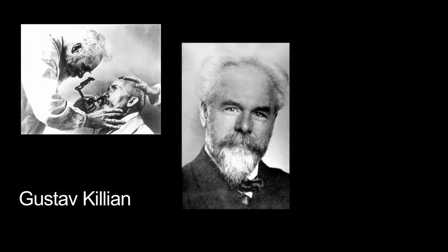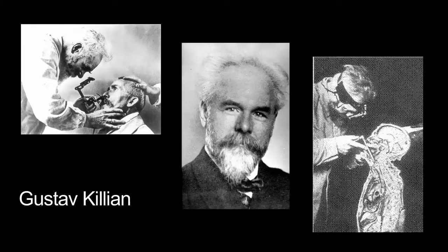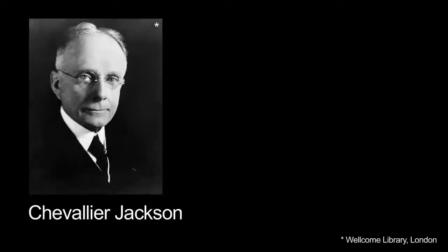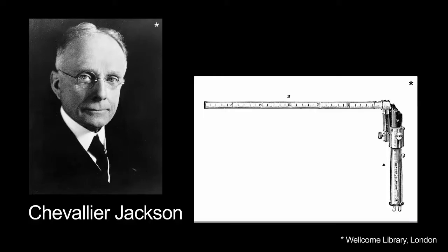The first bronchoscopy ever performed was in 1897 by a German laryngologist named Gustav Killian, who used a rigid scope in a conscious patient using topical cocaine as a local anaesthetic in order to remove a pork bone. Later in the 1920s, Chevalier Jackson inspected the trachea and the main stem bronchi using a rigid scope.